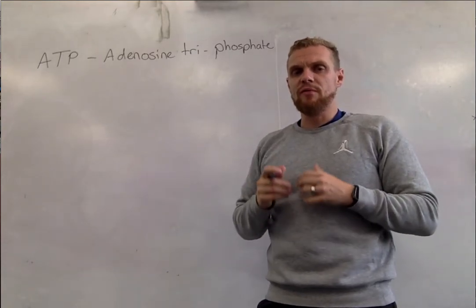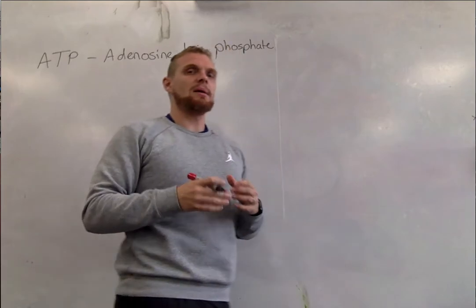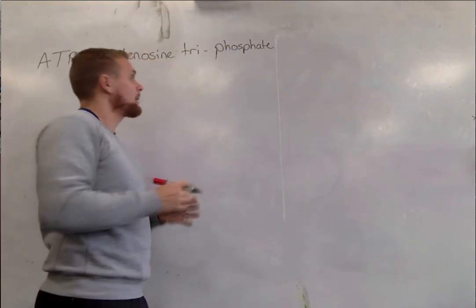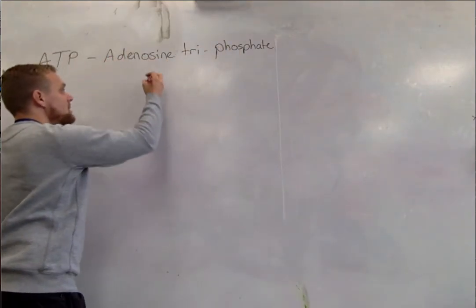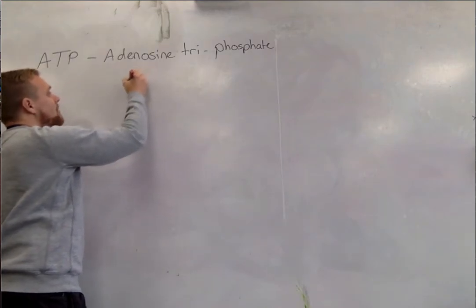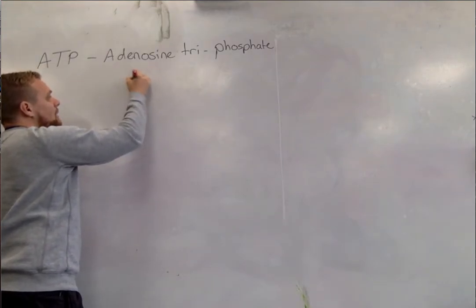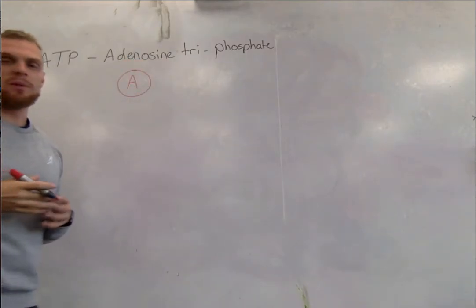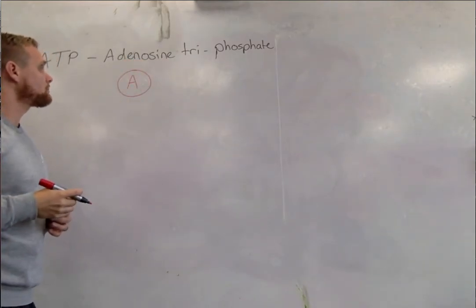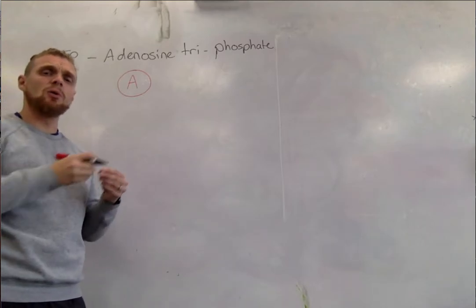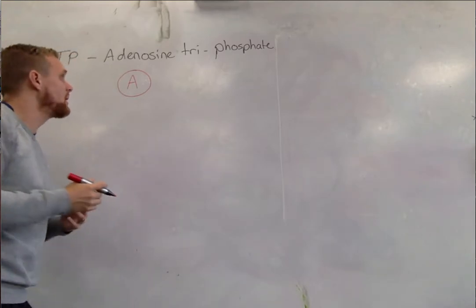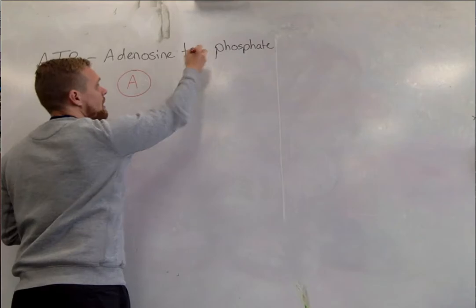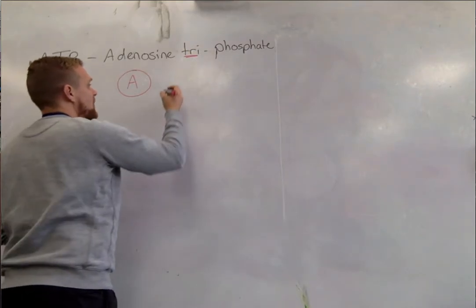When we draw it and visually represent ATP it might make a little more sense. Inside the human body, inside the muscles, we have the chemical adenosine which we're going to represent with an A with a circle around it.